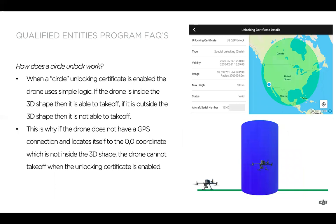In regards to how a circle unlock works: if you have a circle unlock, the drone uses fairly simple logic. If it's inside the 3D shape — the circle — it is able to take off. If it's outside the 3D shape, it's not able to take off. So if your drone doesn't have a GPS connection and locates itself to the 0,0 coordinate, which is not inside the 3D shape, the drone won't be able to take off when the unlocking certificate is enabled. Hopefully that gives a good overview of the QEP program, and our next video will cover downloading and enabling the unlocking certificates in more depth, along with troubleshooting steps. Thanks!